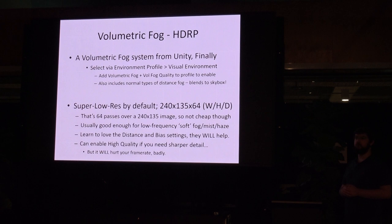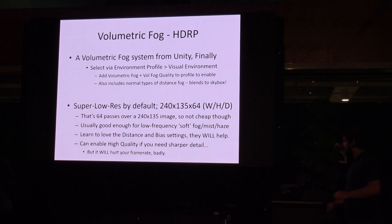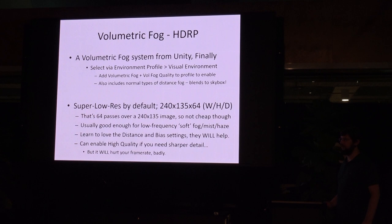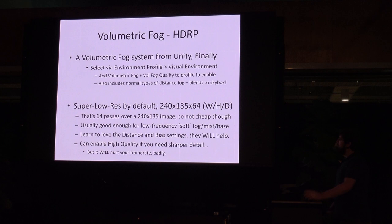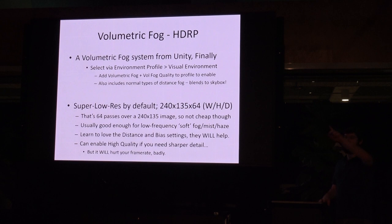Volumetric fog — anyone who's tried it before knows how badly performance can suffer. But this stuff isn't actually too bad. The volumetric system from Unity has been a long time coming since around Unity version 5. It's part of the High Definition Render Pipeline and actually looks fairly good. It's a bit light on features compared to Aura 2, but until Aura 2 becomes HDRP compliant, this is really your option. It also includes distance fog — the long-distance exponential fog blend to skybox — so no more worrying about sharp cutoffs in your terrain as it goes to skybox. That's gone.